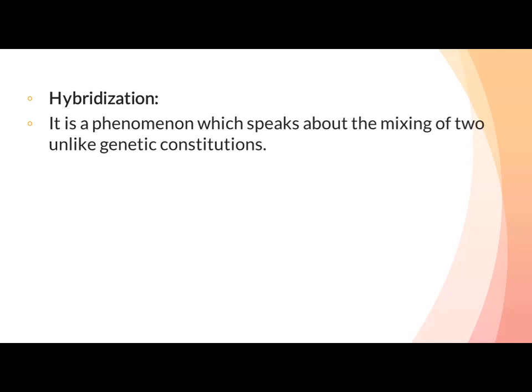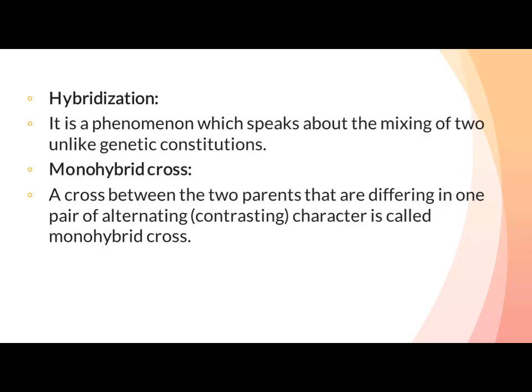Hybridization: It is a phenomenon which describes the mixing of two unlike genetic constitutions. Hybridization وہ طریقہ کار ہے جو بتاتا ہے کہ کس طرح دو genetically different organisms مل کر ایک hybrid organism بناتے ہیں۔ Monohybrid Cross: A cross between two parents differing in one pair of contrasting characters is called monohybrid cross — جیسے height، flower color، seed shape، یا seed color۔ In this type, a single character is used.